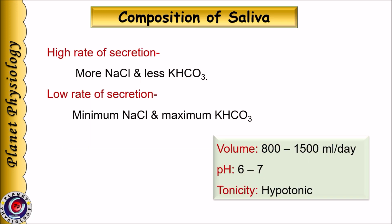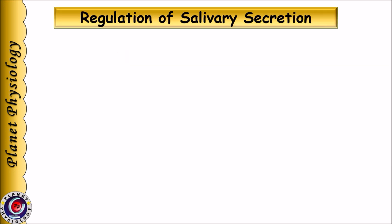The concentration of these ions in saliva depends on the rate of secretion. If the rate is higher, sodium and chloride concentration in saliva is more, and potassium and bicarbonate concentration is less, because ductal cells do not get sufficient time to process the primary secretion. Daily secretion of saliva ranges between 800 to 1500 ml. Its pH ranges between 6 and 7, and it is hypotonic in nature.